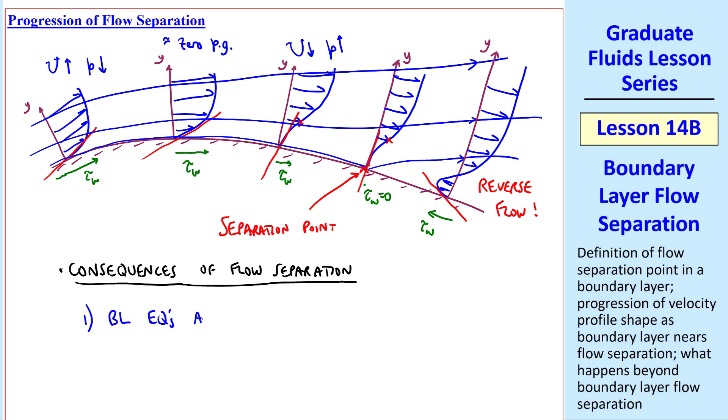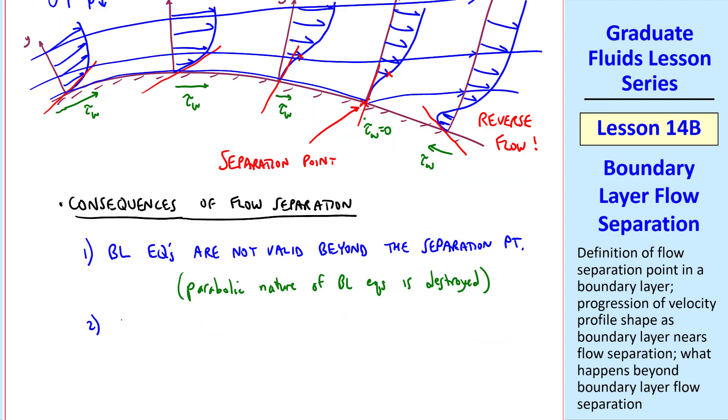First of all, the boundary layer equations are not valid beyond the separation point. Why not? Recall that the boundary layer equations were parabolic, where we had to have information upstream, and then we march downstream. We did not specify the downstream boundary conditions, just the wall, the outer flow, and some inlet area. But when you have reverse flow, you have flow coming in from the back, or from the outlet. And thus, the parabolic nature of the boundary layer equations is destroyed.